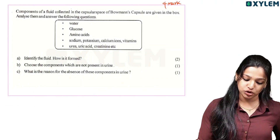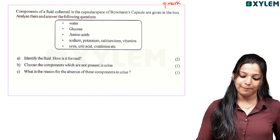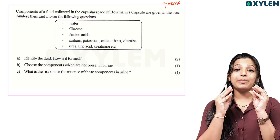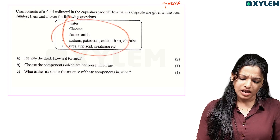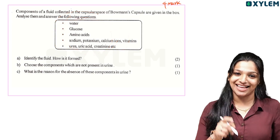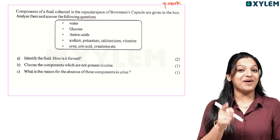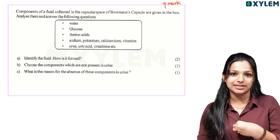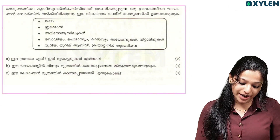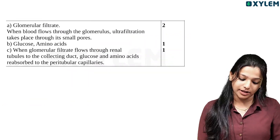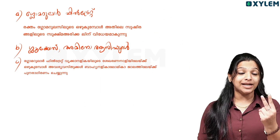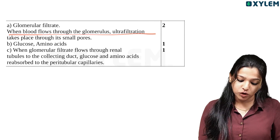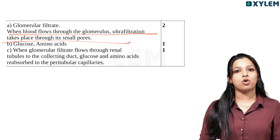This is what we are talking about today. Components of fluid collected in the capsule are given in the box — analyze them and answer the question. In Bowman's Capsule, the glomerulus is used to identify and filter the fluid. When blood flows through the glomerulus, ultrafiltration takes place through its small pores.